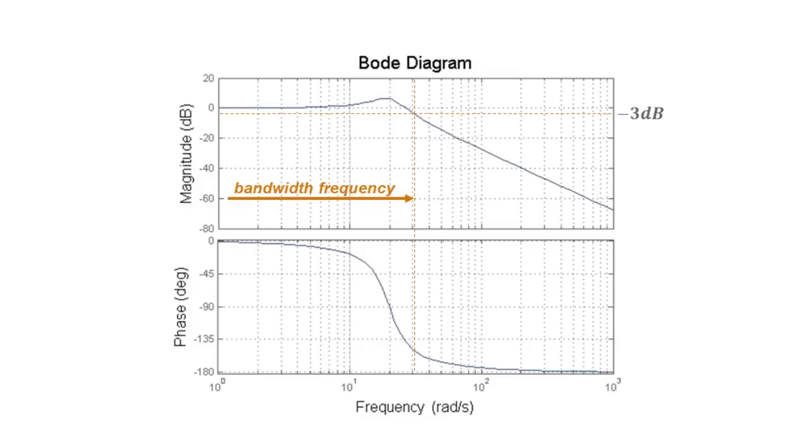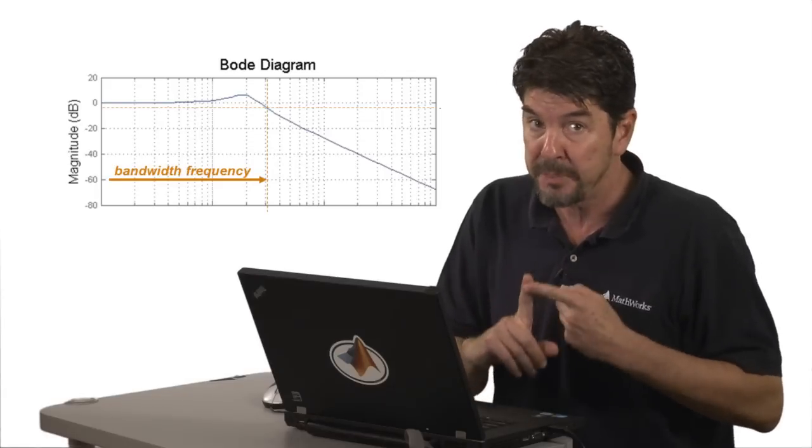Negative three dBs means that the attenuation is going below the RMS value of the input signal, where output to input amplitude ratio is the square root of two over two.